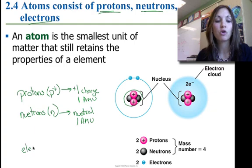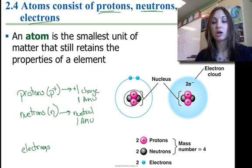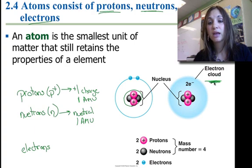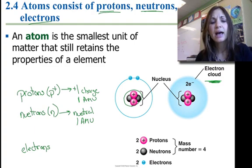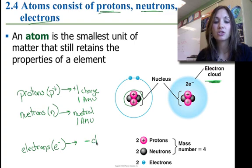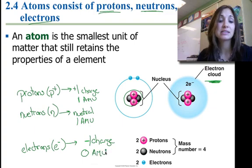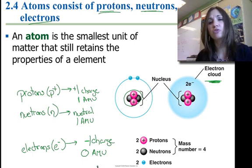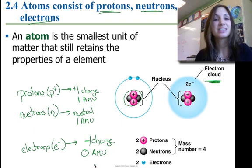Electrons are found in orbitals outside of the nucleus. We used to think of it as really defined rings, but we now know it's more of an electron cloud, as shown in this other picture. The electron cloud predicts the probability that an electron is in any given space. Electrons, sometimes denoted E with a superscript negative sign, have a negative-one charge and a negligible weight — we consider their mass to be zero AMUs. They do have some mass, however it's so small in comparison to the protons and neutrons that it doesn't contribute to the atomic mass of the overall atom.